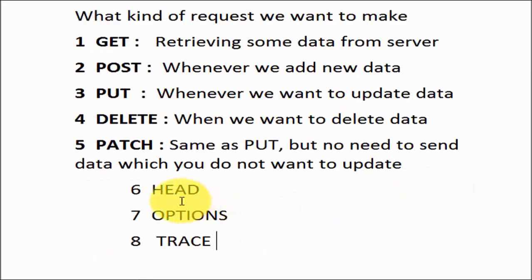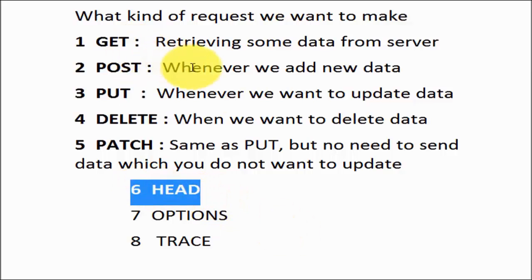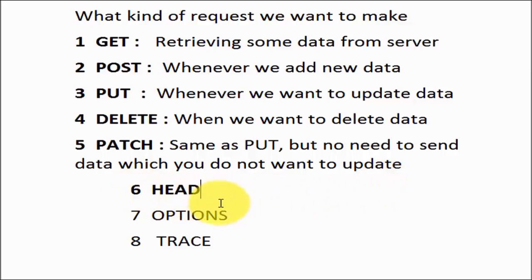Now we have 3 more methods: HEAD, OPTIONS, and TRACE, used very rarely. HEAD method is used whenever you want to get only the header in the response. When we send a request to the server, the response has two sections: a header and a body. HEAD is similar to GET but returns only the header, not the body — useful when we want to check the response code without validating the response body.